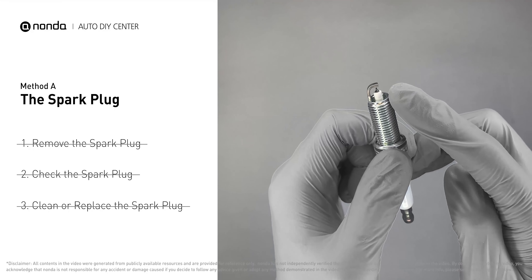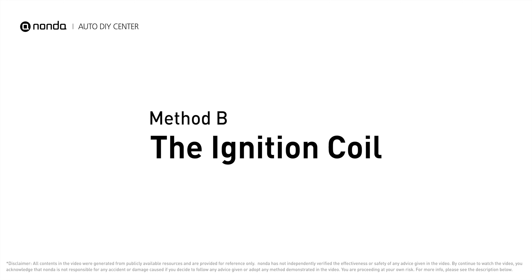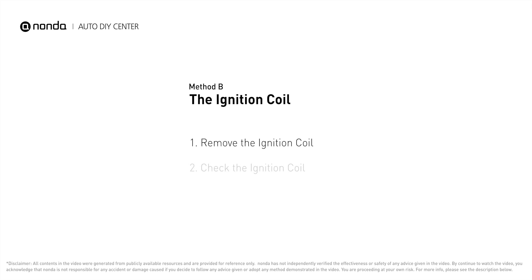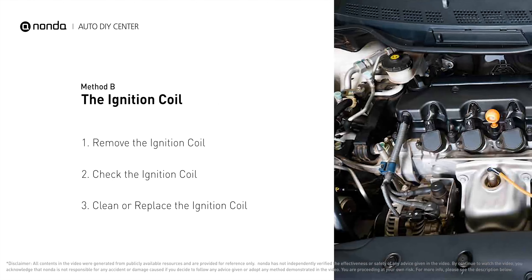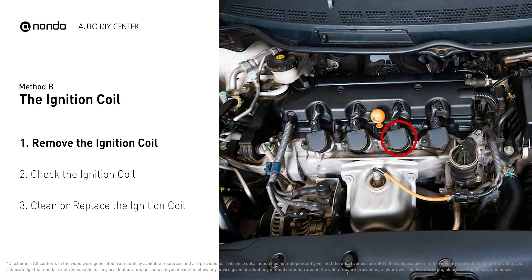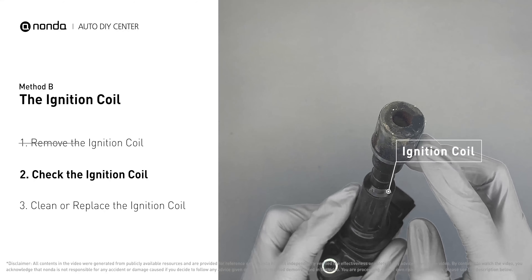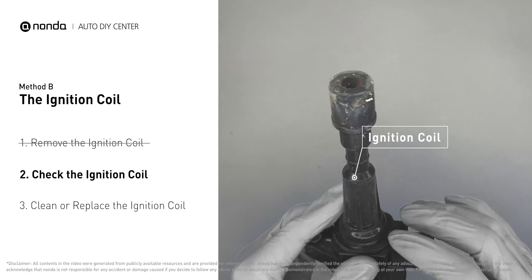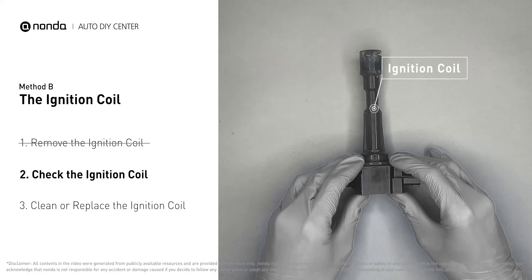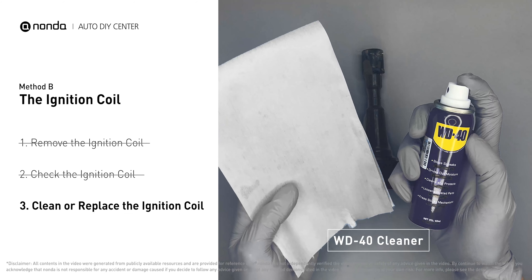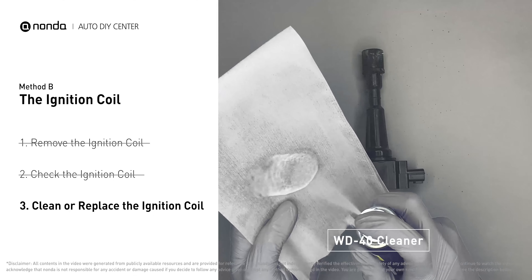Method B: the ignition coil. Ignition coils are usually installed directly at the cylinder head above the spark plug. First, carefully remove the ignition coil from the engine. Check to see if the ignition coil is either stained or damaged — if the ignition coil is covered with engine oil or stains, simply clean it.